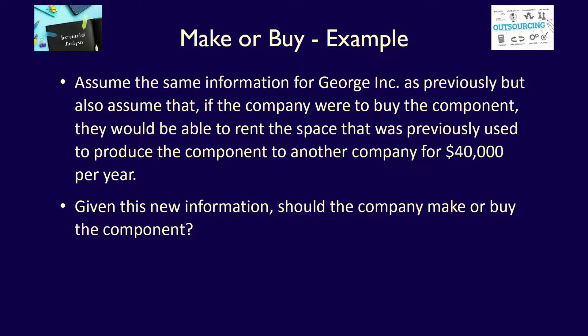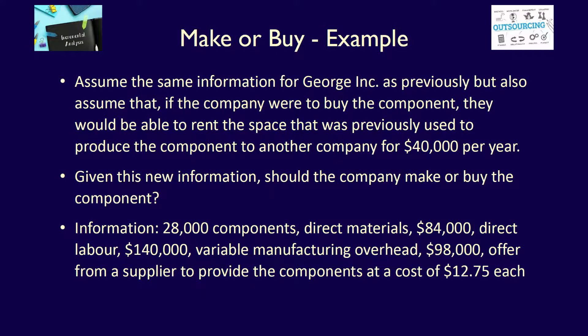Assume the same information for George Inc. as previously noted, but also assume that if the company were to buy the component, they would be able to rent the space previously used to produce the component to an outside company for $40,000 per year. Given this new information, should the company make or buy the component? Our previous information still holds: 28,000 components, direct materials $84,000, direct labor $140,000, variable manufacturing overhead $98,000, and an offer from a supplier at $12.75 each. In addition, George Inc. would earn $40,000 of rental revenue if they rented the space.